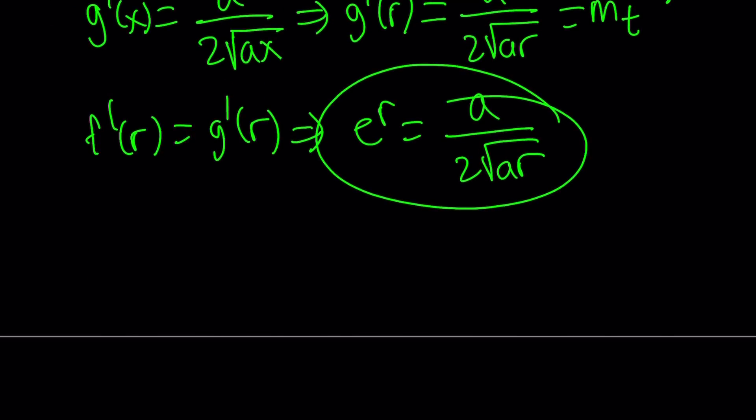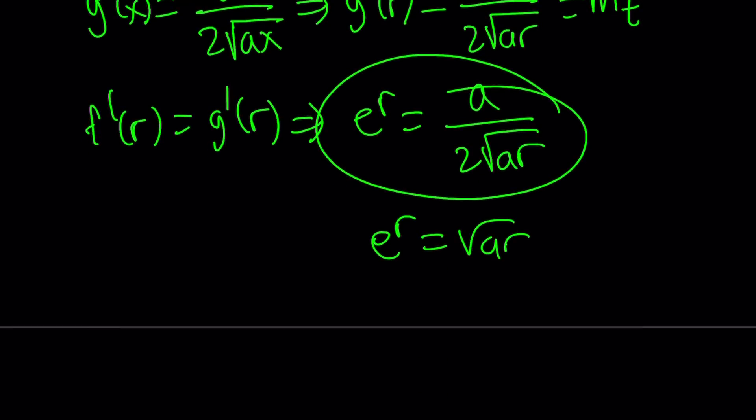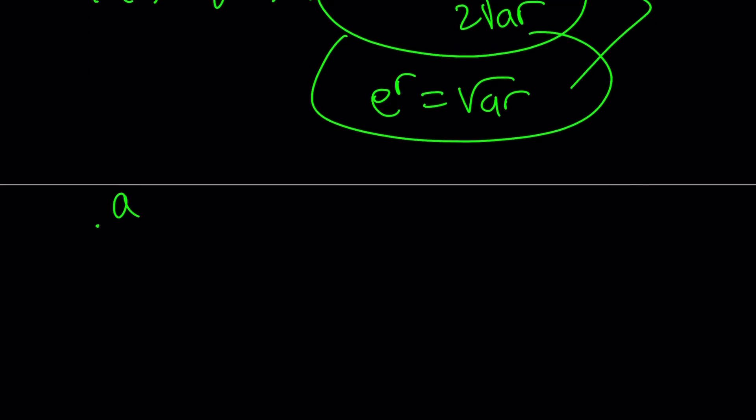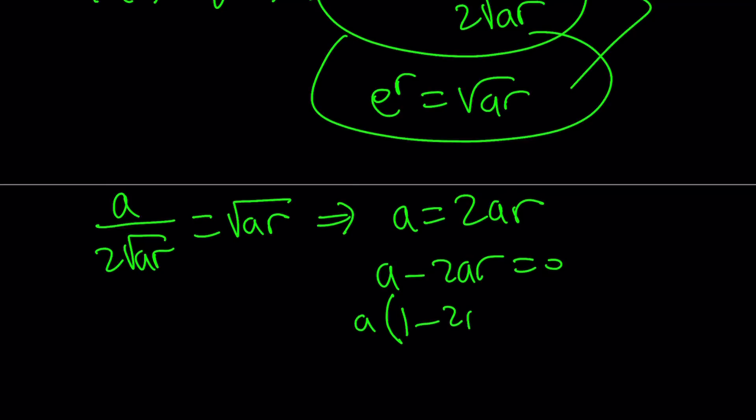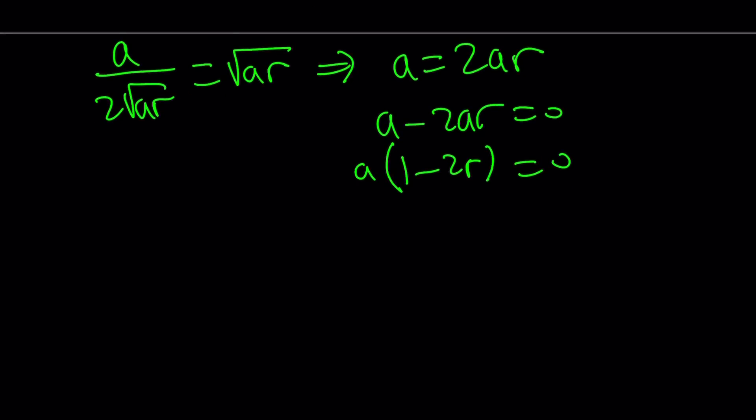So let's go ahead and put those together. e to the r equals square root of ar. Since they are both equal to e to the r, we basically set these two equal to each other. So that gives us a over two times the square root of ar equals square root of ar. Cross multiply, you get a equals 2ar. Let's put everything on the same side and factor out a. We get a equals zero or r equals one half. Now what happens if a is equal to zero? If a is equal to zero, you get e to the x equals zero. But obviously, this has no solutions. e to the power x can never be zero unless x is approaching negative infinity.